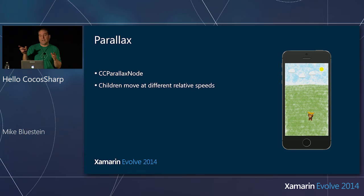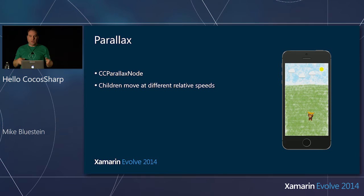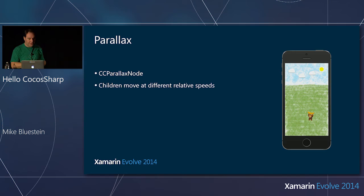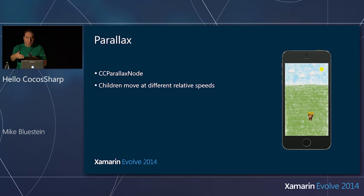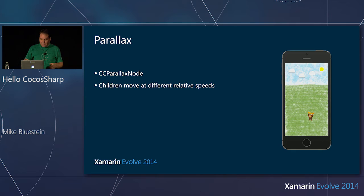For an infinite scroller you'd roll something yourself — repositioning images to keep scrolling. But for something going back and forth, like a background in an Angry Birds style game, or clouds that are just a couple on screen, it's very trivial with CC Parallax Node. The whole thing becomes: once I create this scene and start adding nodes to it, I just tell CocosSharp what I want in the scene and it just renders. If I want animations and behaviors, I do that with actions, and it just happens — very declarative, very high level, cross-platform.